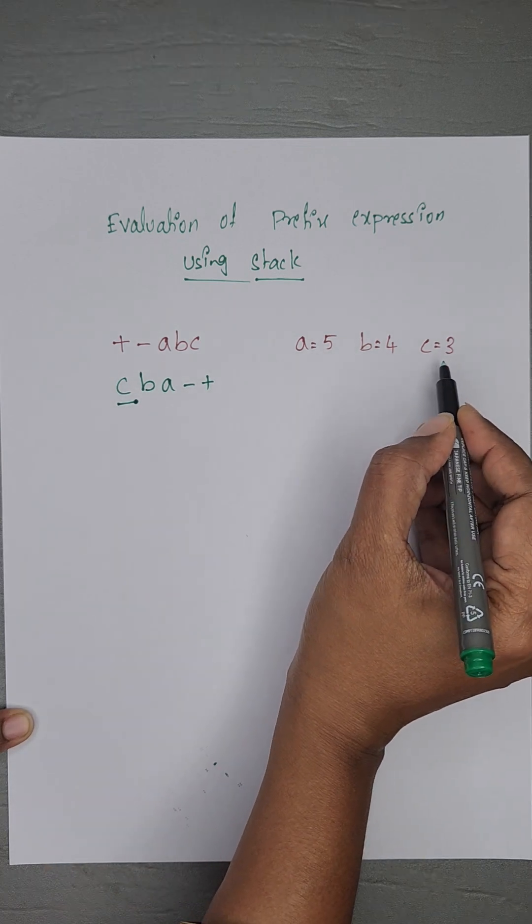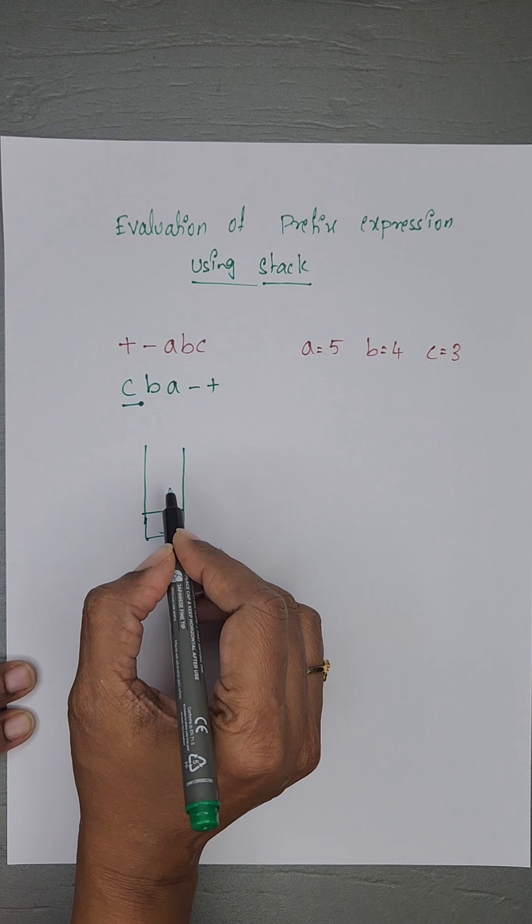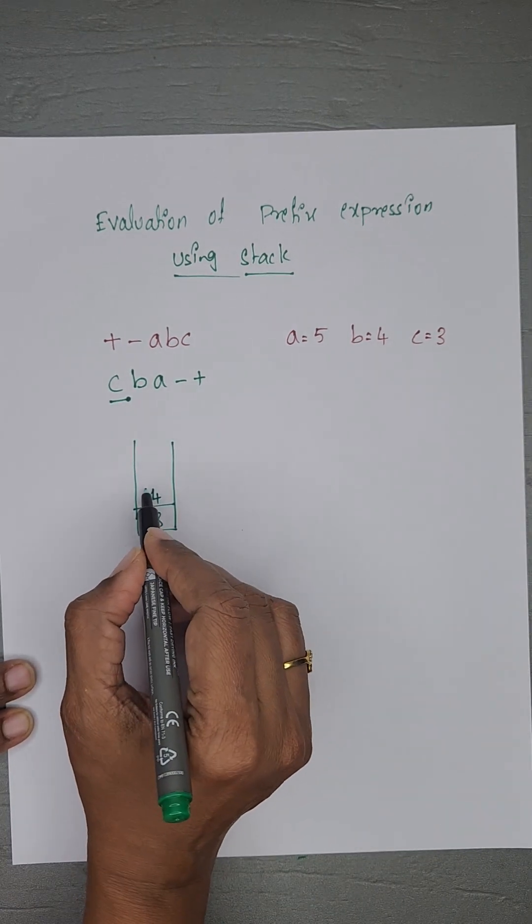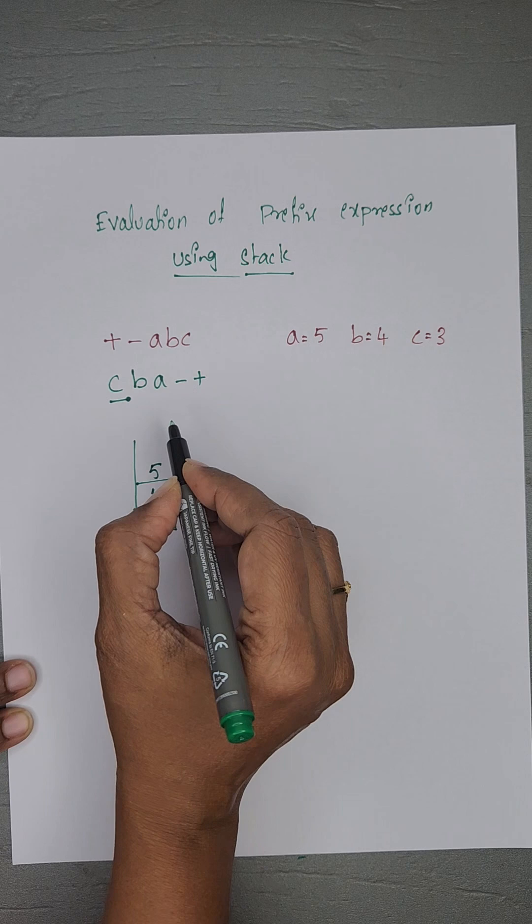If it is an operand, read its value and push into the stack. c has value 3, push into stack. b has value 4, push into stack. a is also an operand, read its value and push into stack.